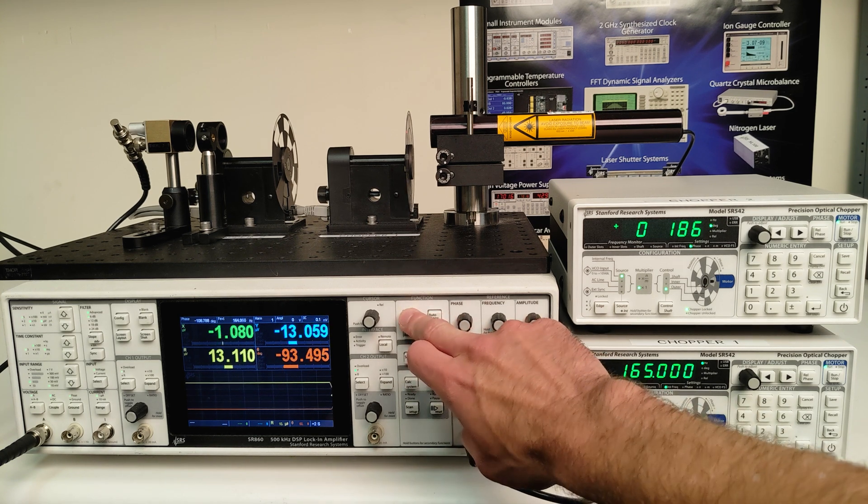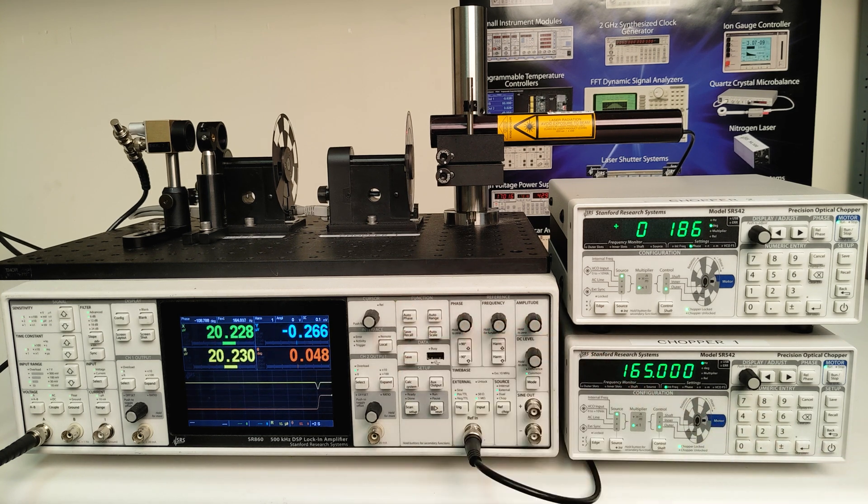These are the baseline R and theta values for the singly chopped beam. Let's go ahead and press auto phase to consider this zero phase, and any departures will now be easier to see.